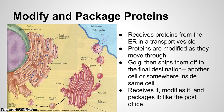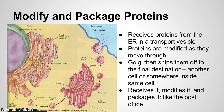Remember we have the smooth endoplasmic reticulum and we have the rough endoplasmic reticulum. The rough endoplasmic reticulum makes those proteins that can be within the cell or going out of the cell. From the rough endoplasmic reticulum, we're going to receive those proteins in a transport vesicle. This is our rough endoplasmic reticulum, and we see these proteins within the transport vesicle coming over to our Golgi apparatus.